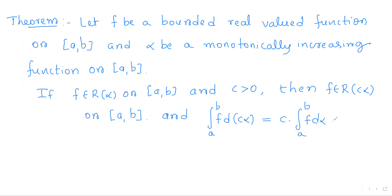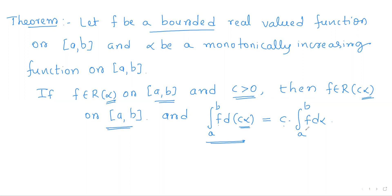One more property of a monotonically increasing function α. The statement is: let f be a bounded real-valued function on [a, b] and α any monotonically increasing function on [a, b]. If f is Riemann-Stieltjes integrable on [a, b] with respect to α and c is any positive real number, then f is Riemann-Stieltjes integrable with respect to cα, and the integral of f w.r.t. cα equals c times the integral of f w.r.t. α.